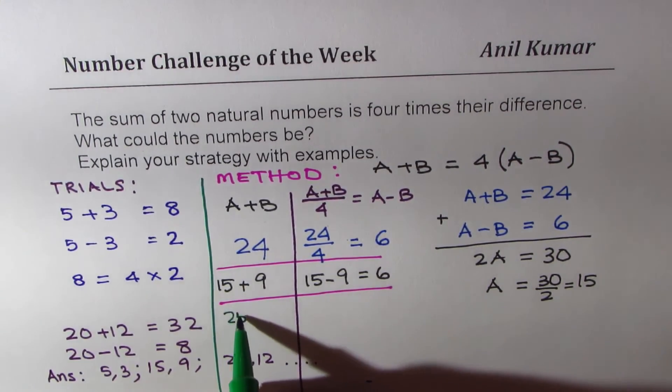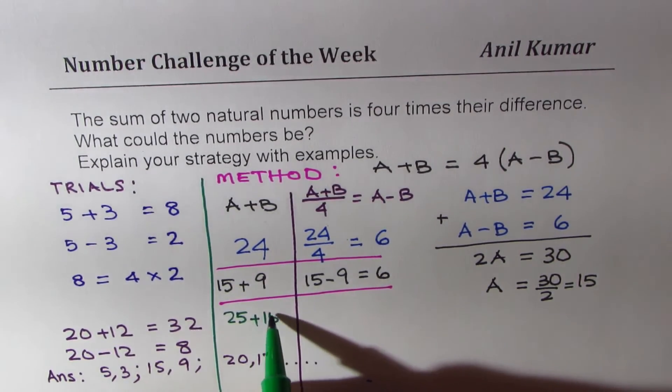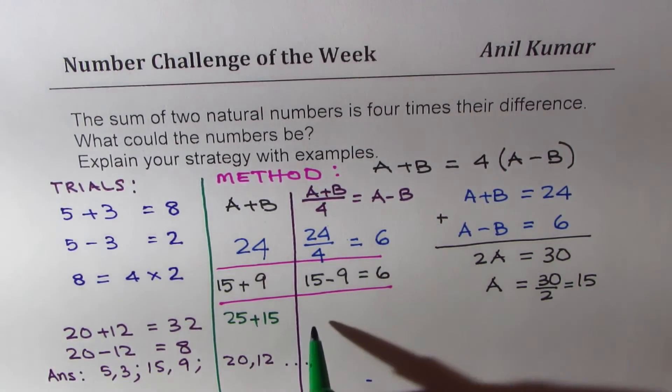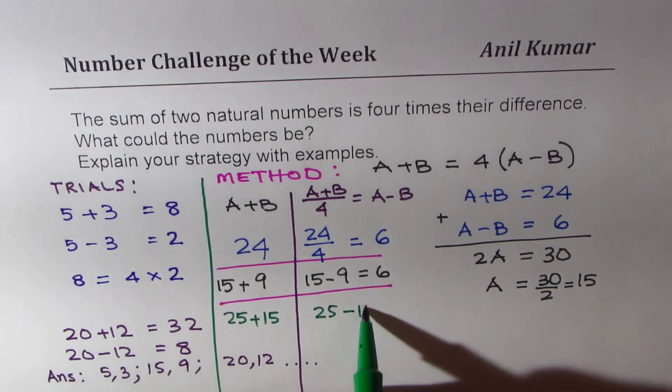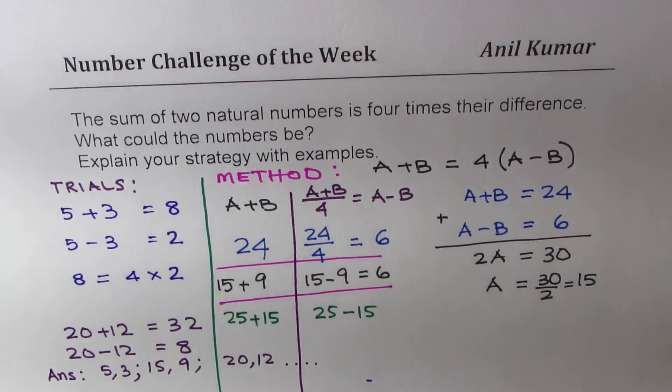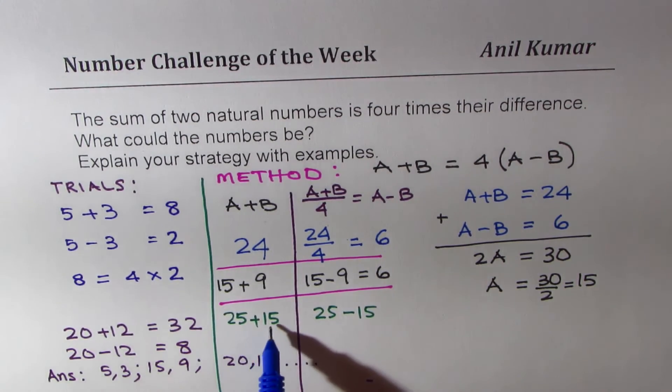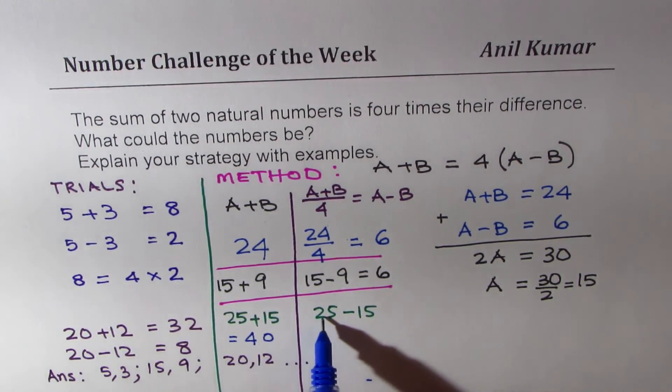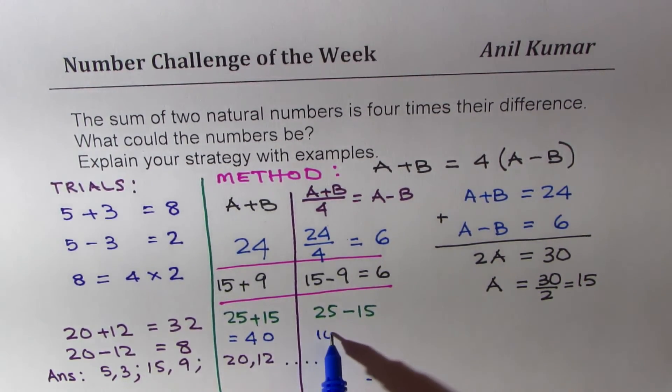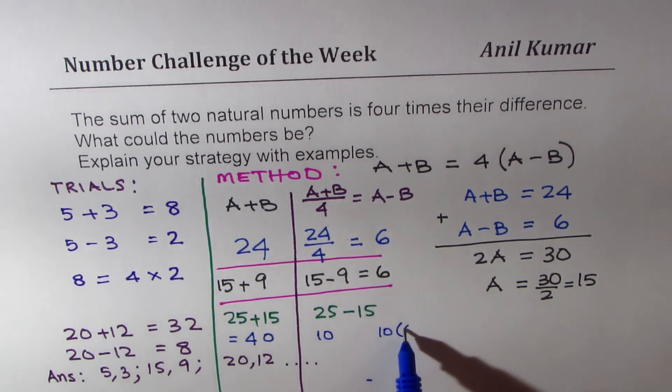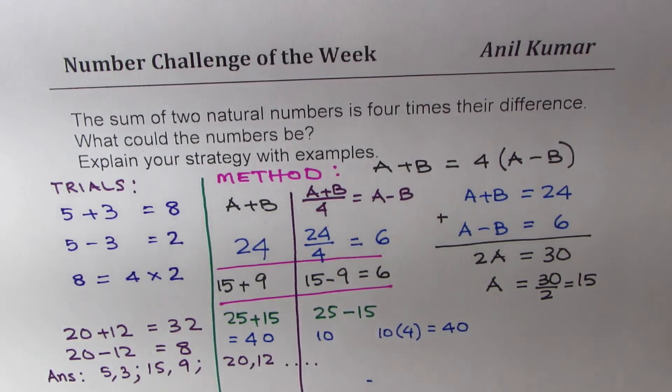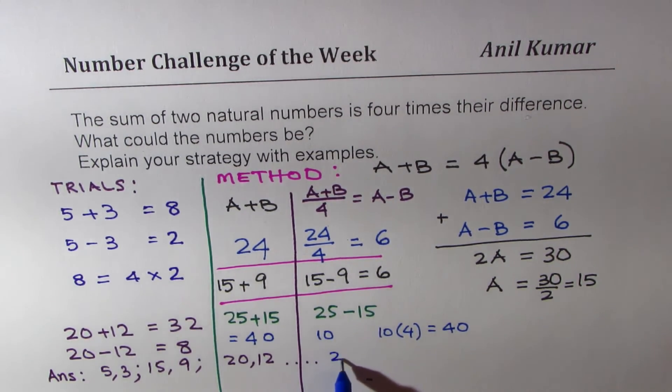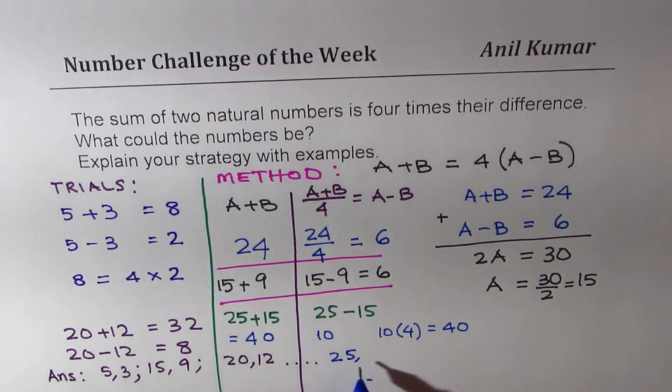We are going to test the number. If I multiply by 5, I get 25 and 15. If I add 25 and 15, what do I get? And if I do 25 minus 15, what do I get? When you add them, 5 and 5 is 10 and then you get 40. And when you take the difference, you get 10, and 10 times 4 equals 40. So it works. That means the next set could be 5 times 5 and 3, which is 25 and 15.